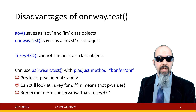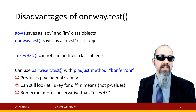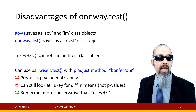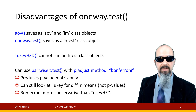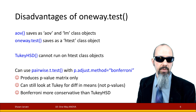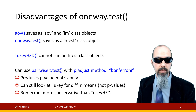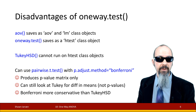Some disadvantages of using oneway.test compared to AOV involve the objects they save. With AOV, if you save it as an object, its class is AOV and LM — where LM is short for linear model, which we'll get to in regression. If you save oneway.test as an object, it saves as an H-test class. H-test objects store different attributes than AOV or LM class objects, which means we can't use the TukeyHSD function on it and therefore can't get pairwise testing with mean differences in the usual way.